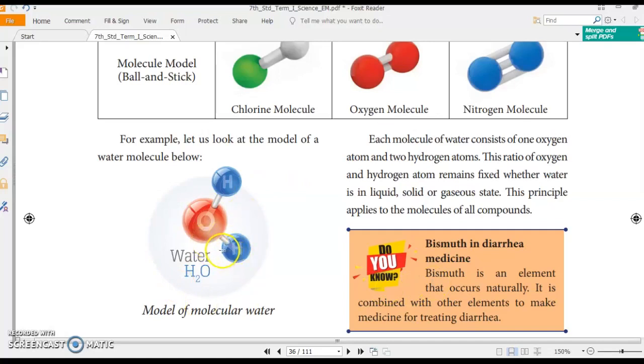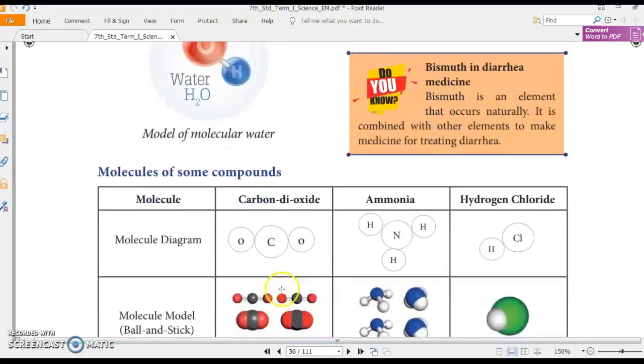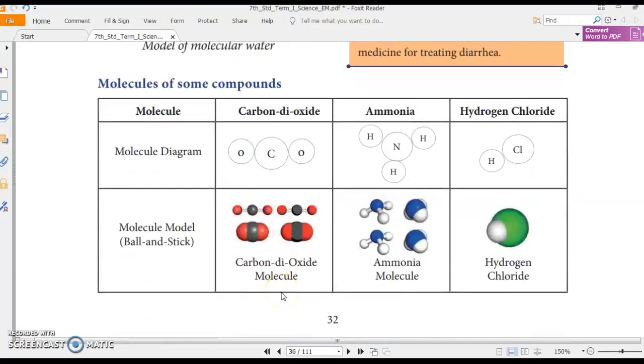Okay. Now, let us look at the molecules of some compounds. See, the molecular diagram of carbon dioxide is represented here. For example, ammonia is represented here and hydrogen chloride is represented here. In carbon dioxide, one carbon atom and two oxygen atoms. In ammonia, one nitrogen atom and three hydrogen atoms. In hydrogen chloride, one chlorine atom and one hydrogen atoms. And molecule model or ball and stick model is stated here.